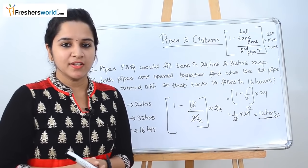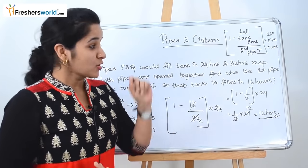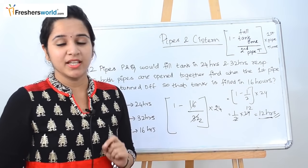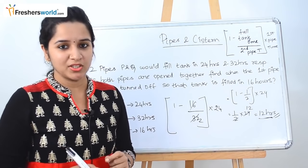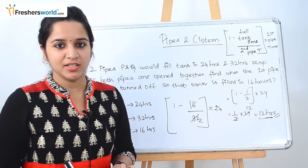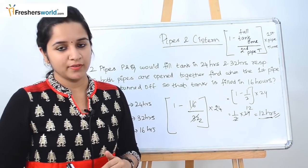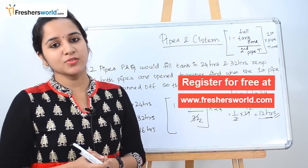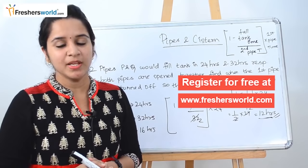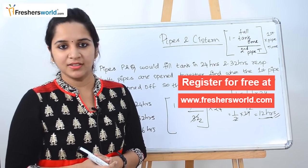In today's video we discussed the two main concepts for pipes and cistern. If you know these two formulas, many similar questions in aptitude exams will be very easy to solve. If you are looking for a job, kindly register at Freshersworld.com. Like this video and subscribe to our channel. Thank you.